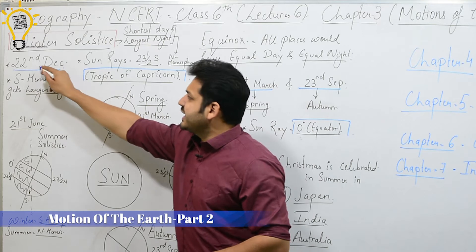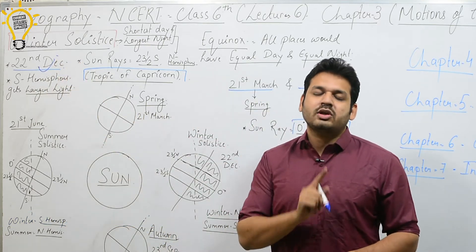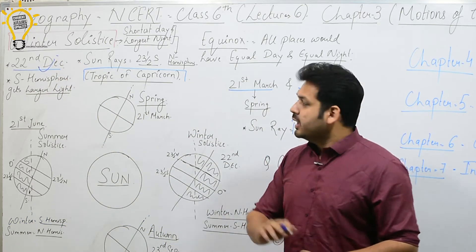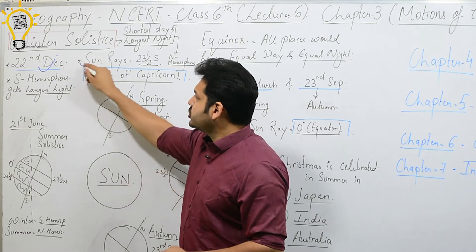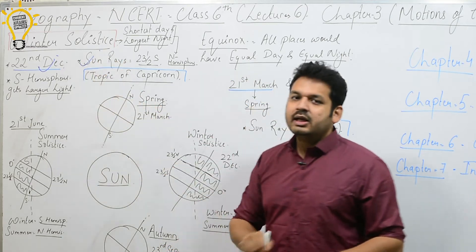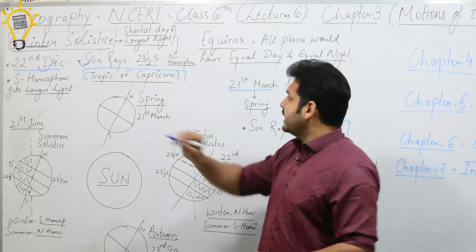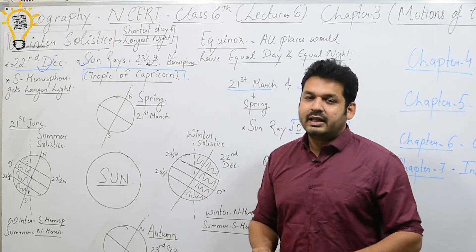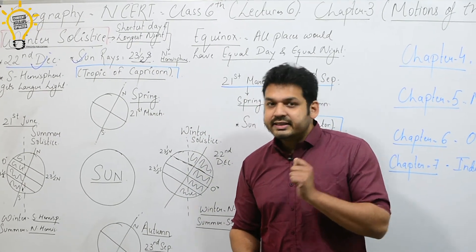Summer solstice date is 21st June. Winter solstice date is 22nd December. For winter solstice, the sun is directly overhead at 23.5 degrees south — that is the Tropic of Capricorn.